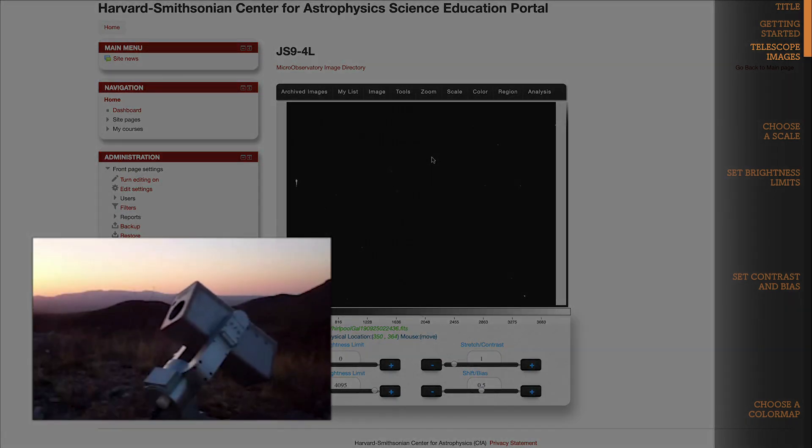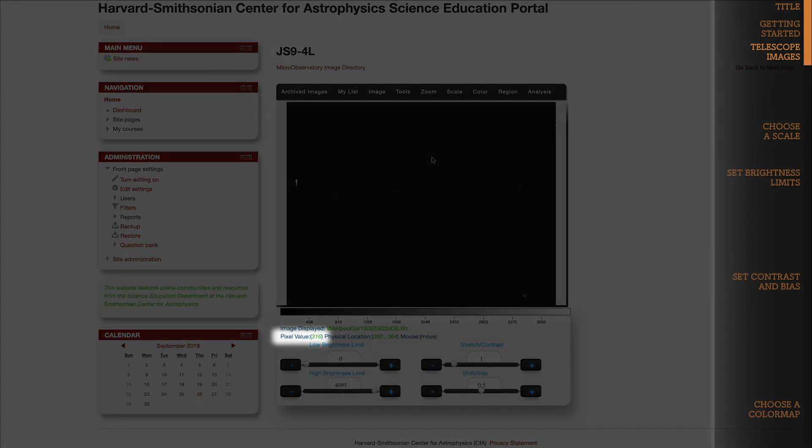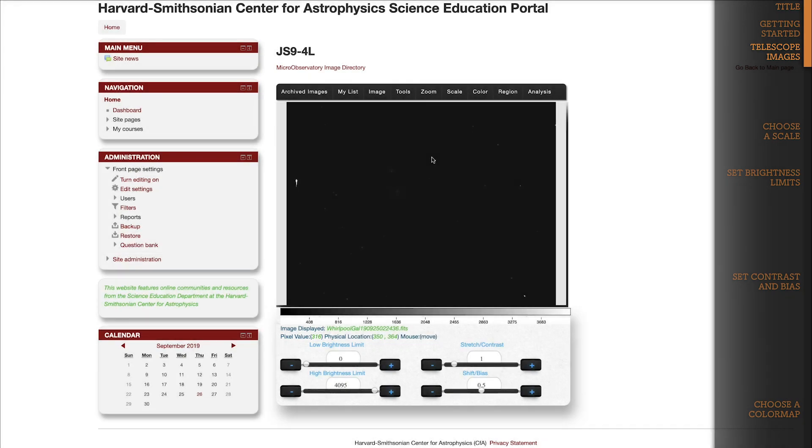When a telescope takes your picture, its light detector records brightness for each point in the sky. This brightness translates into a pixel value for each pixel in your image. You can find pixel value listed here under the image. And watch what happens to the value as I move my mouse over the image. The pixel value changes, because every pixel has its own value to represent brightness.